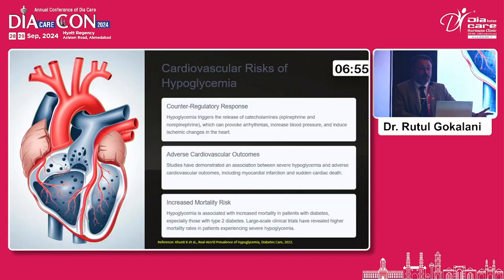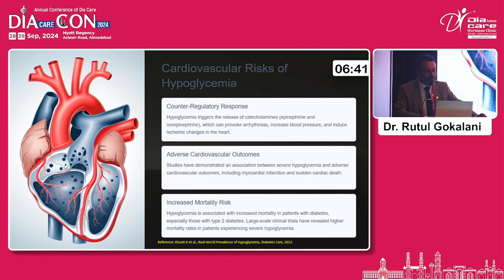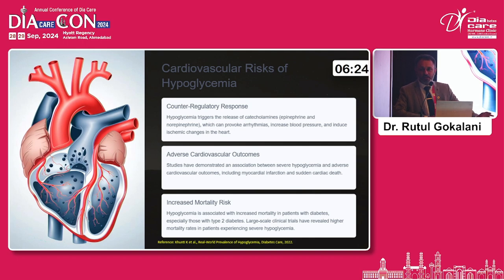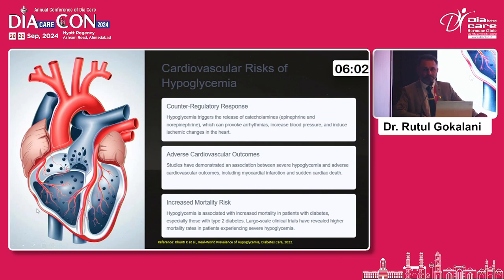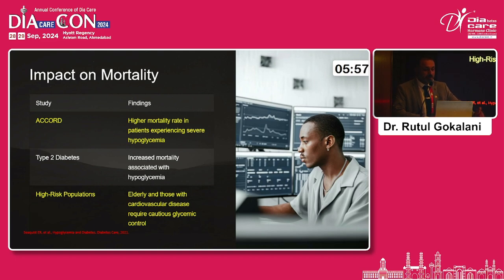Regarding cardiovascular risk of hypoglycemia: patients who have had any cardiovascular problem have a higher chance, and vice versa — hypoglycemic patients have higher chances of mortality. Hypoglycemia triggers the release of catecholamines, which can provoke arrhythmias, and this is one of the commonest known reasons for increased mortality. Adverse cardiovascular outcomes are proven with hypoglycemia, and we have the ACCORD trial which is very much relevant. Increased mortality associated with hypoglycemia has been demonstrated in large-scale clinical trials showing higher mortality rates in patients experiencing severe, Level 3 hypoglycemia.